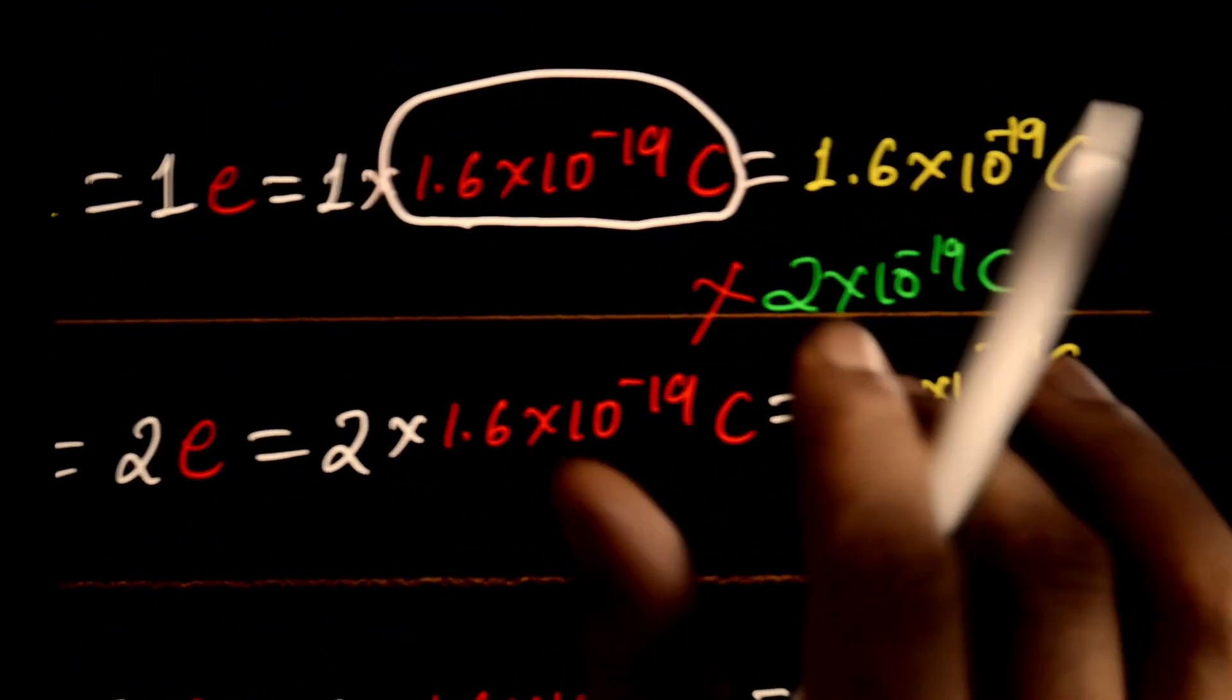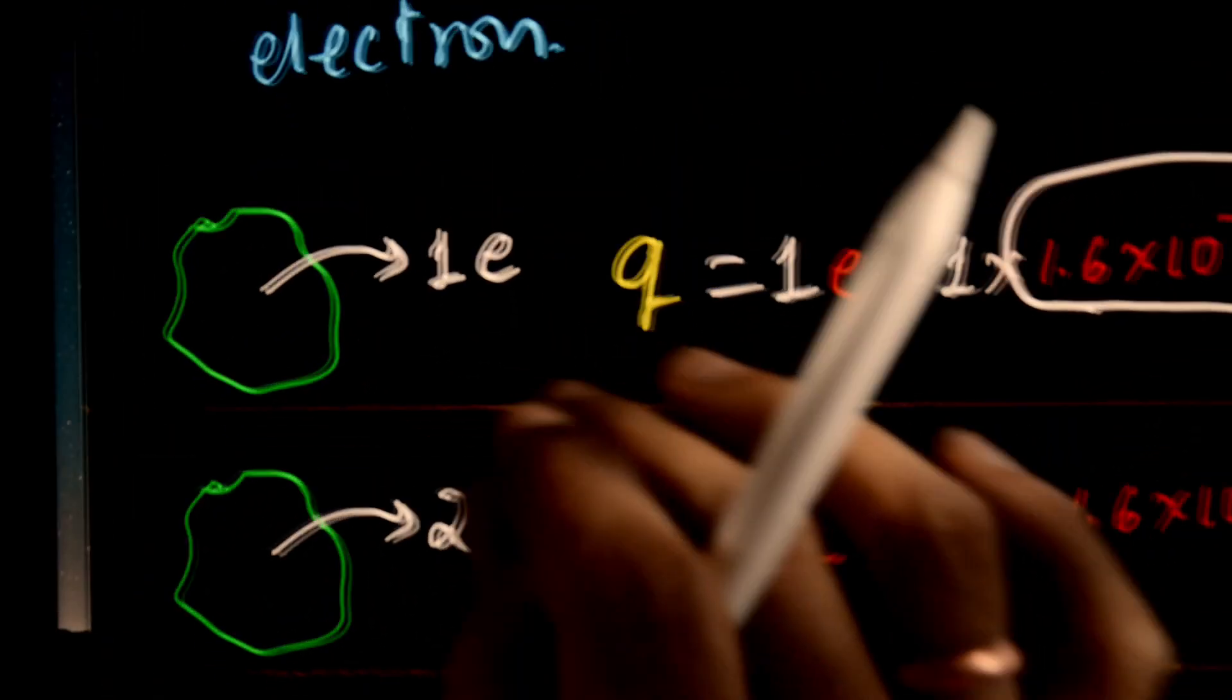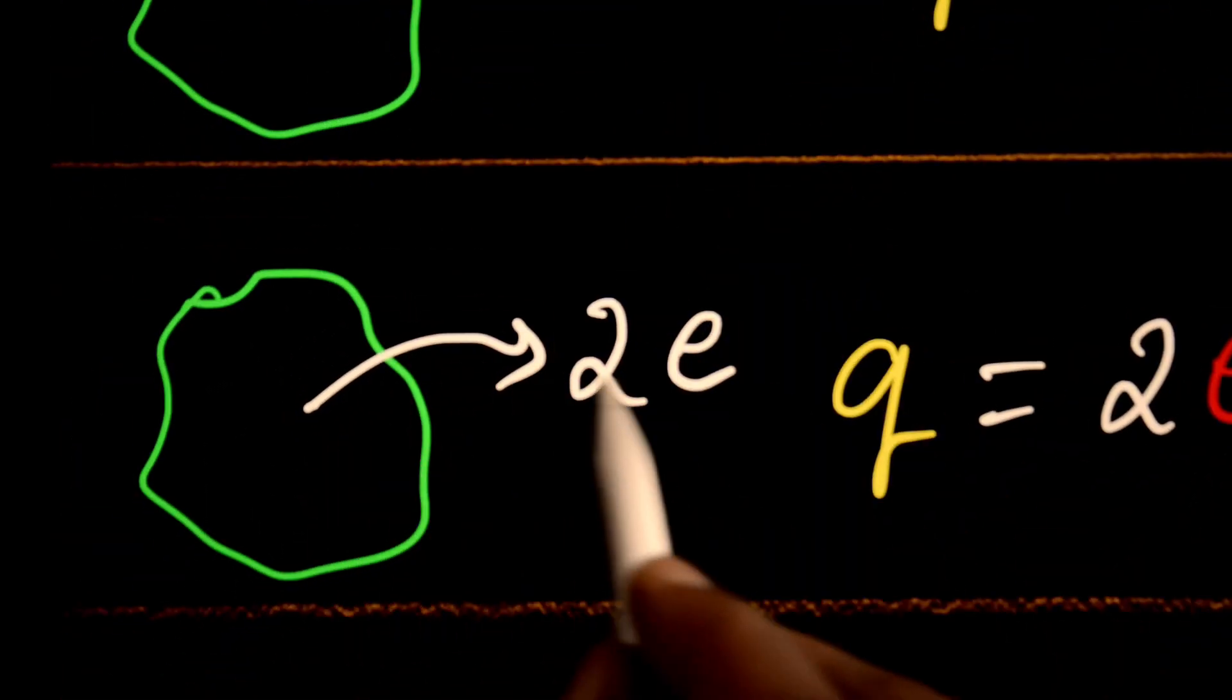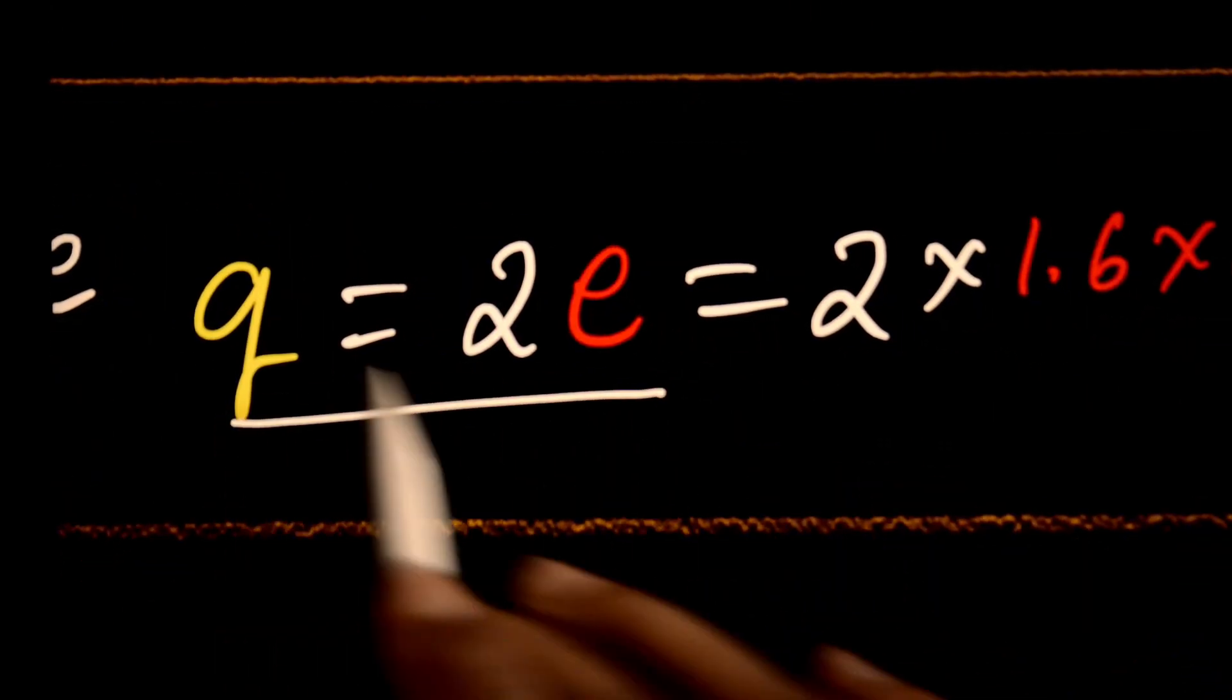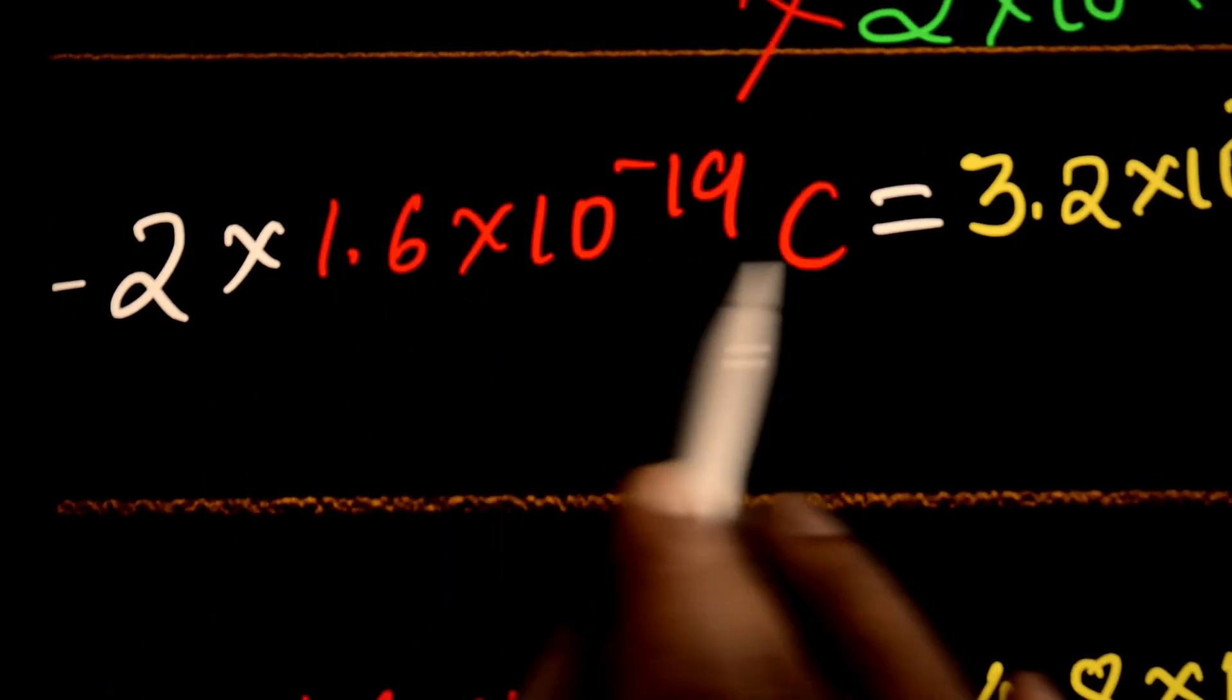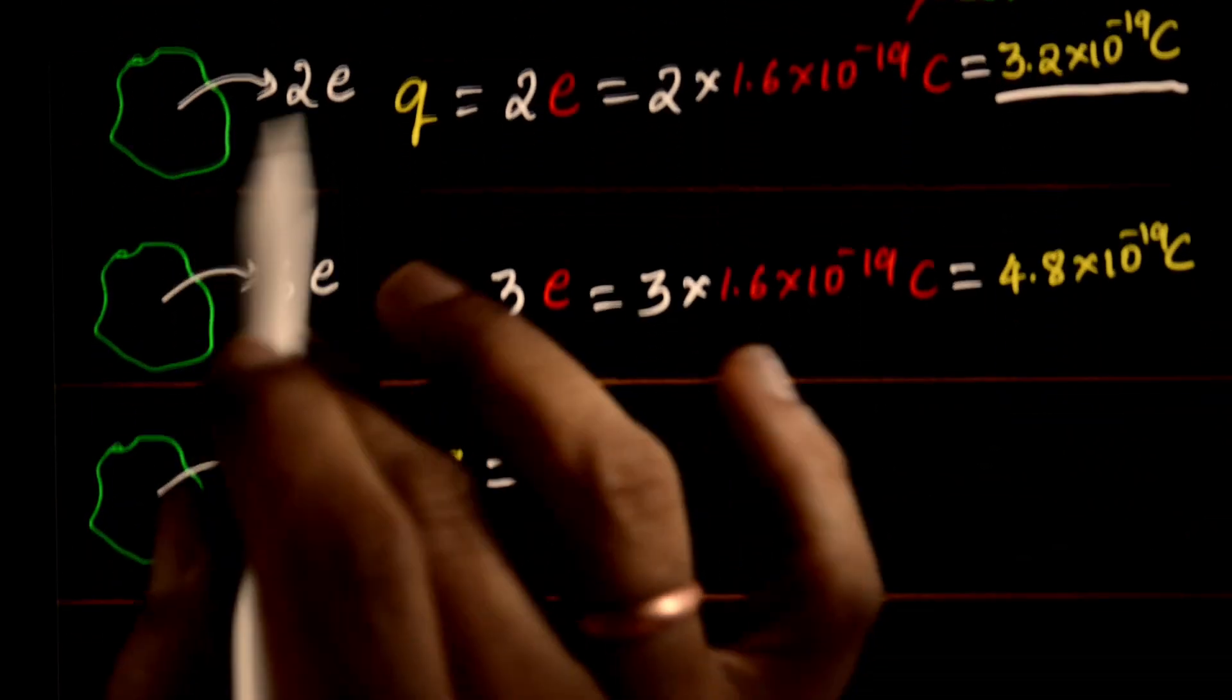The charge on an electron is 1.6 × 10^-19 coulomb. So 1 electron gives 1.6 × 10^-19 coulomb charge. This is a positive charge in this system. If I remove 2 electrons from this system, you can write Q equals 2E, which means if you simplify, you will get 3.2 × 10^-19 coulomb positive charge.